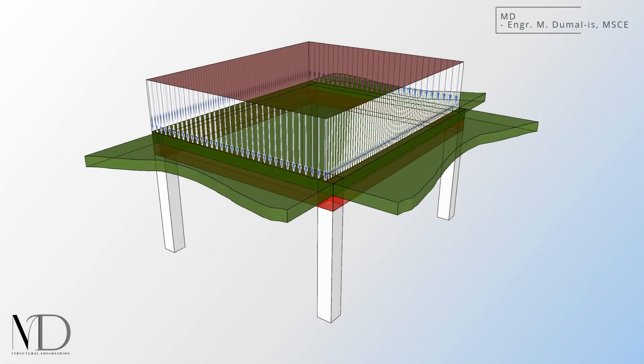How does a slab actually transfer its load to the beam supporting it? It might seem obvious. Gravity pulls the load down and the beams just take it. But the real question is, how does that load get distributed? And more importantly, how do we simplify it for design?